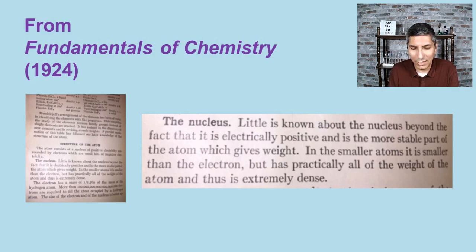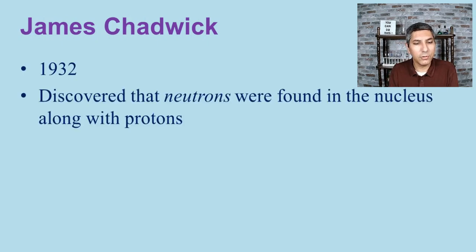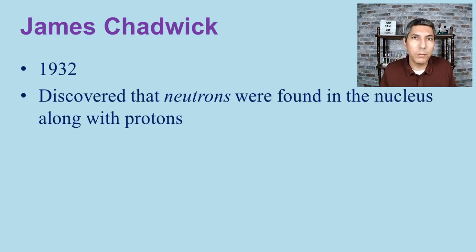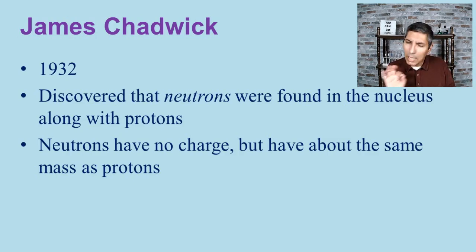To finish our story, James Chadwick, around 1932, discovered that there was additional mass in the nucleus beyond the protons. These extra particles had no charge, so he called them neutrons — because they are neutral. Neutrons have approximately the same mass as protons, though they are ever so slightly heavier.